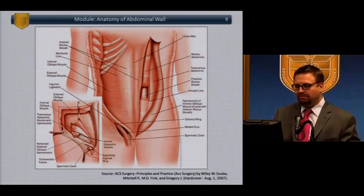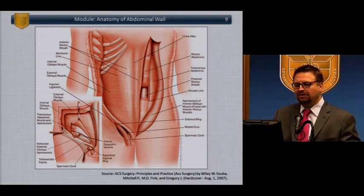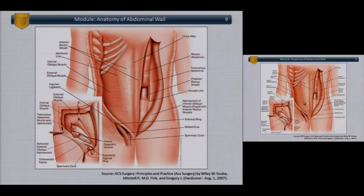Just a review of the layers of the abdominal wall — really the same structure. The semilunar line, or the Spiegelian line, is just the lateral border of the rectus. This is important because of the Spiegelian hernia, which we'll talk about, and which occurs at that line.